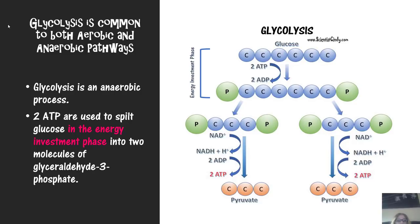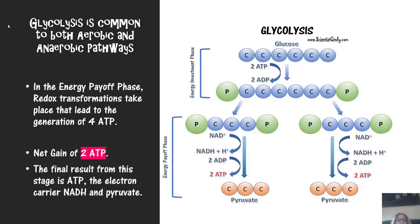The two ATP used to split glucose in the energy investment phase produce the first product called glyceraldehyde-3-phosphate, or G3P. From there we enter the energy payoff phase of glycolysis, where redox transformations lead to the generation of four ATP. We end up with a net gain of two ATP. The final result from this stage is two ATP, two NADH electron carriers, and two pyruvate molecules from our glucose molecule.